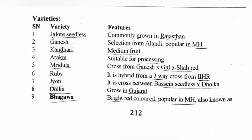Let's see some varieties. Jalur Seedless is common in Rajasthan. Ganesh is a selection from Alandi, popular in Maharashtra. Kandari is a medium size fruit crop. Arakhta is suitable for processing. Mridula is a cross between Ganesh and Gula Shah Red. Ruby is a three-way cross developed at IIHR — it is a hybrid.